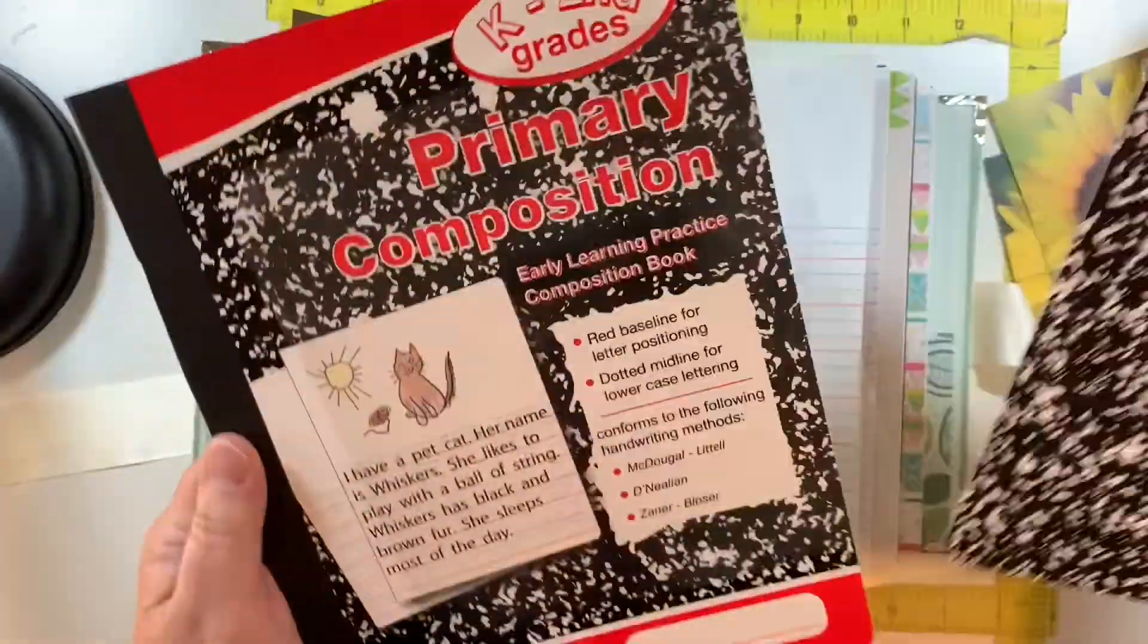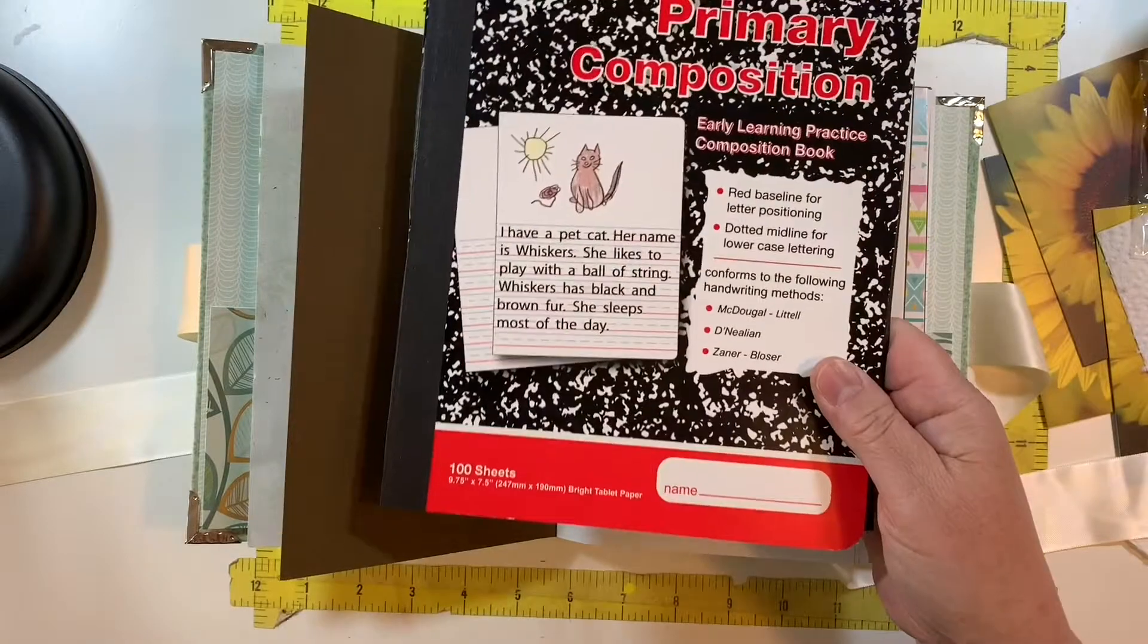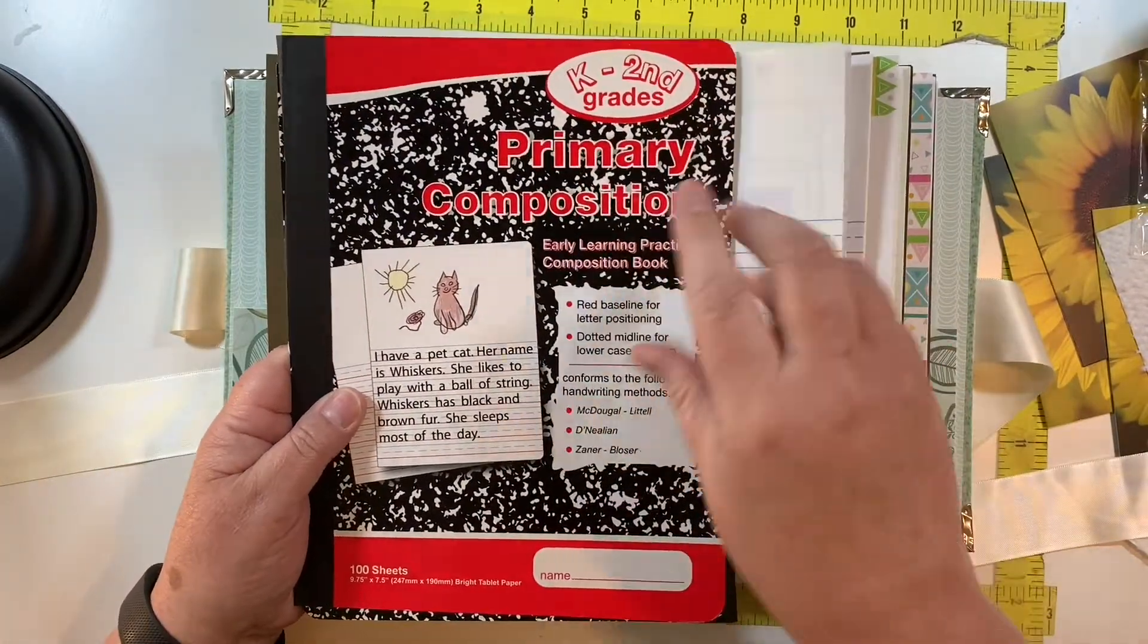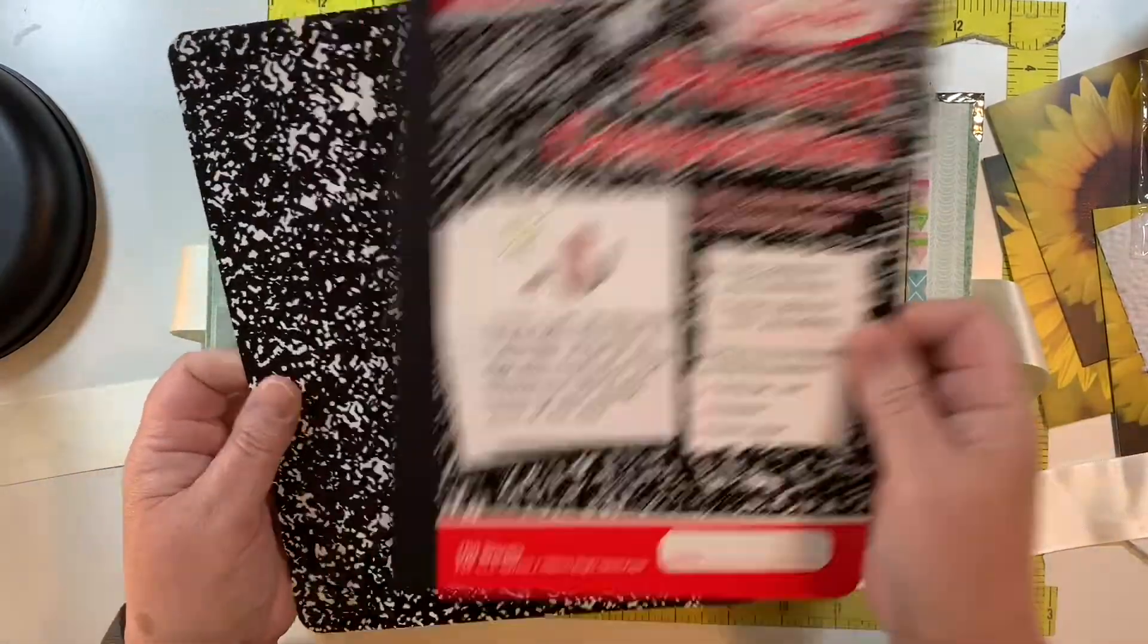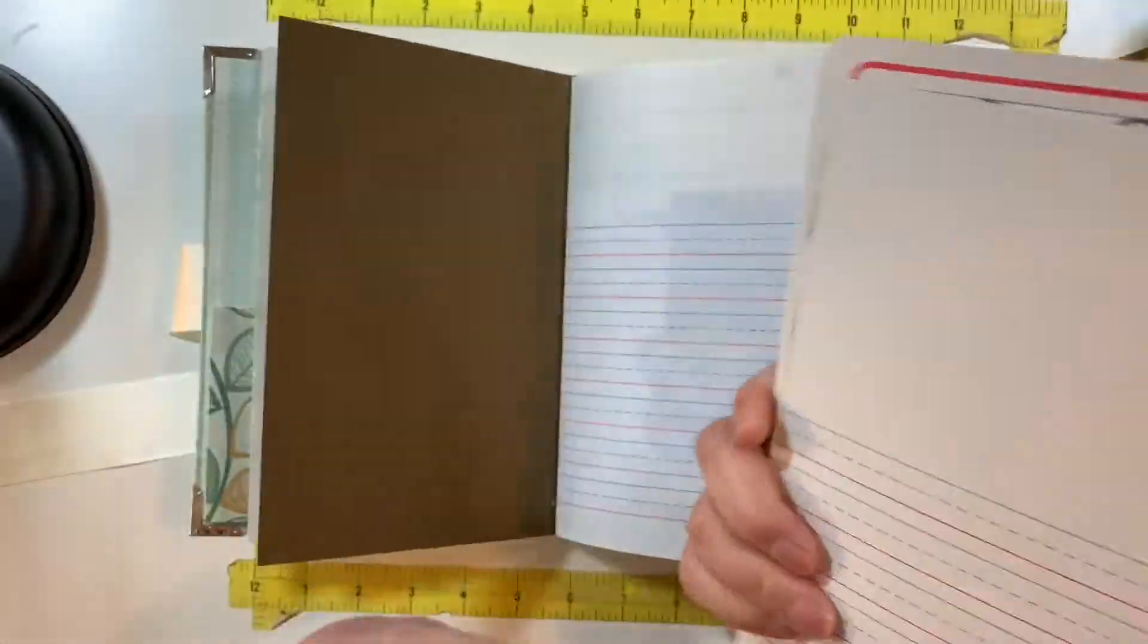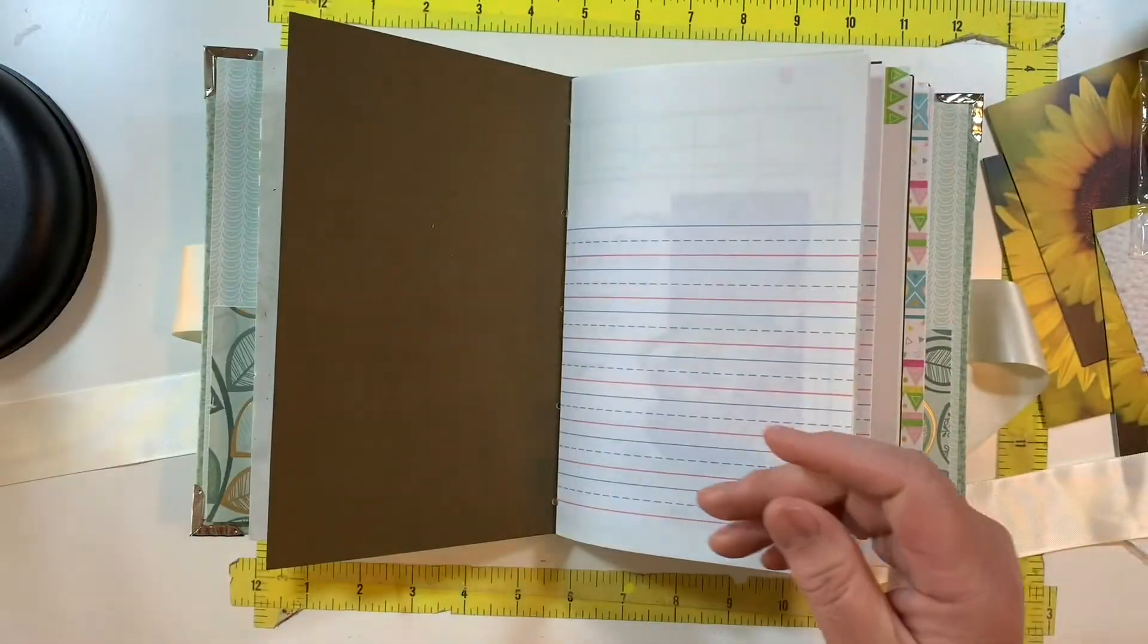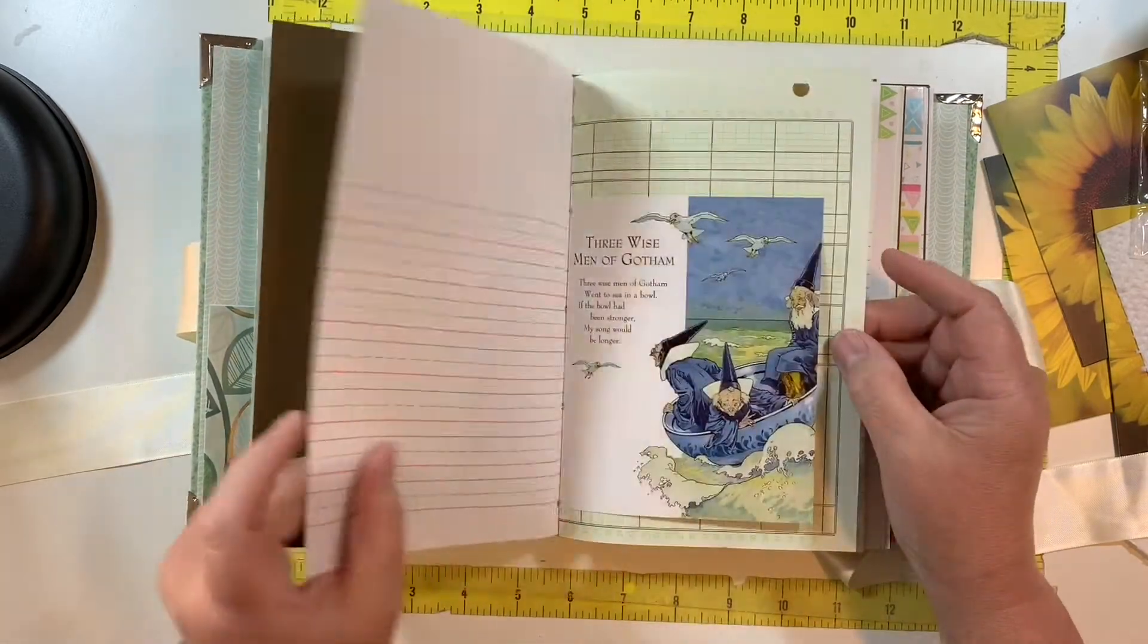I was at Staples not that long ago looking for something. I saw this composition book, 100 sheets, grades K to second. They have one for different grades, so the paper is different in each of them. And I loved it. It was a few bucks. I saved the cover because look how fun. And so I put some of that in here.